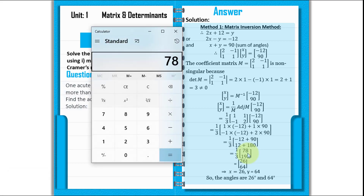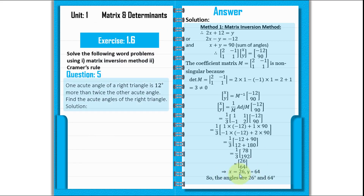Now we divide by 3. 78 divided by 3 is 26, and 192 divided by 3 is 64. So we have answers: X is equal to 26 and Y is equal to 64. The angles are 26 and 64. If we add them: 64 plus 26 is equal to 90. Correct.